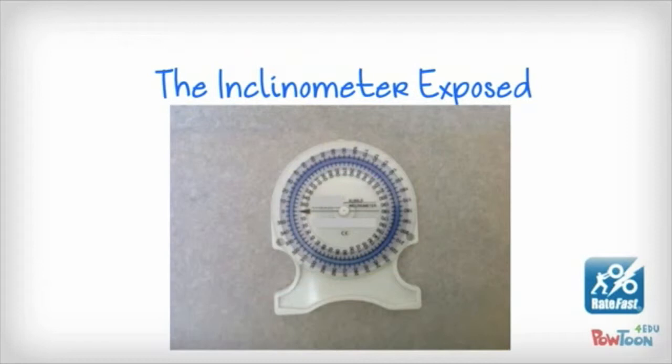One thing to remember about the inclinometer is that when you're measuring spinal motion, there are two inclinometers, one at the top of the spine segment being measured, one at the bottom, and the numbers are simply subtracted. The top number has the lower number subtracted, and the result is referred to as the true angle of spine motion.